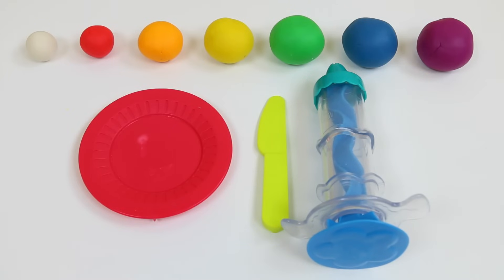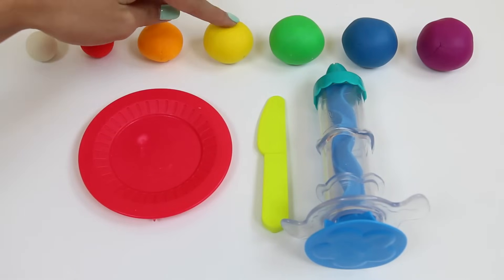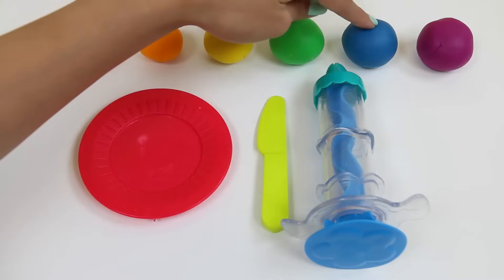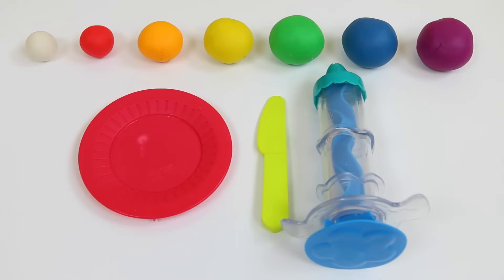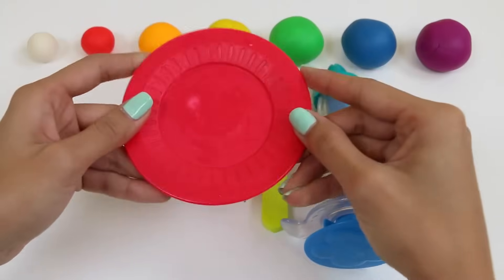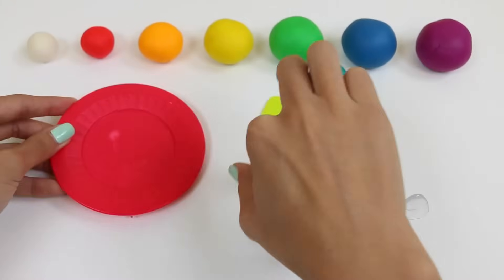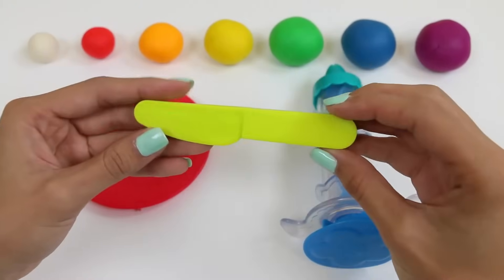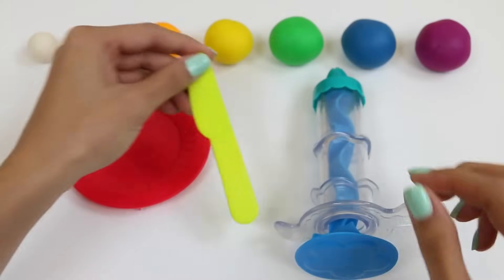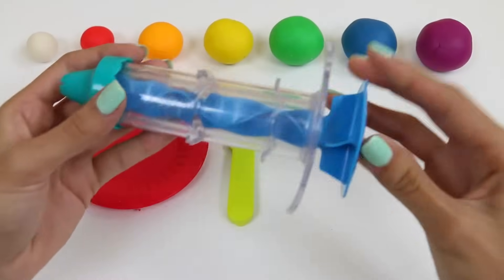All you need to make this is white Play-Doh, red, orange, yellow, green, blue and purple - all the colors of the rainbow - and something to put it on like a plate if you have one. You're also going to need something with an edge like this Play-Doh knife and a Play-Doh swirl extruder.